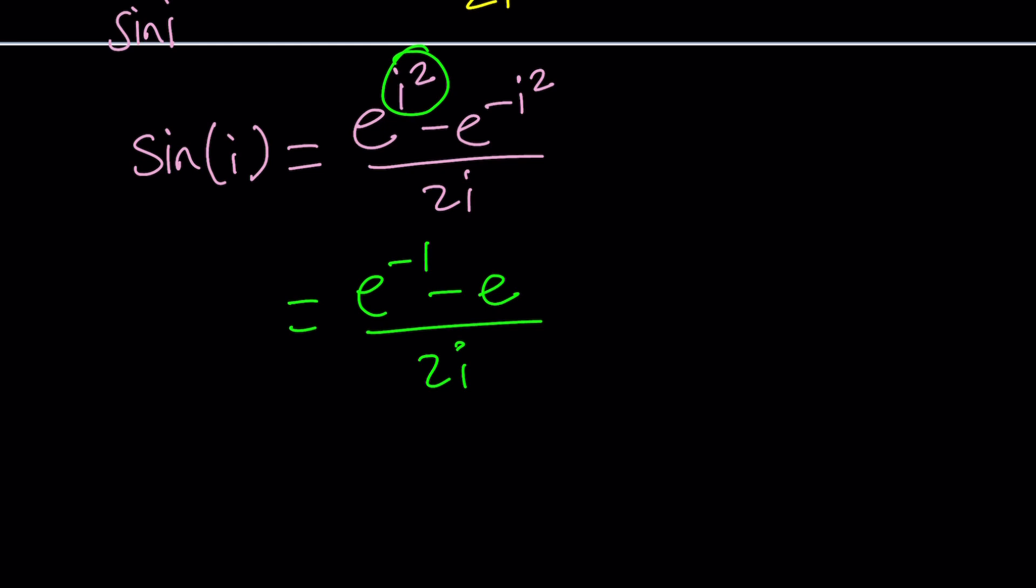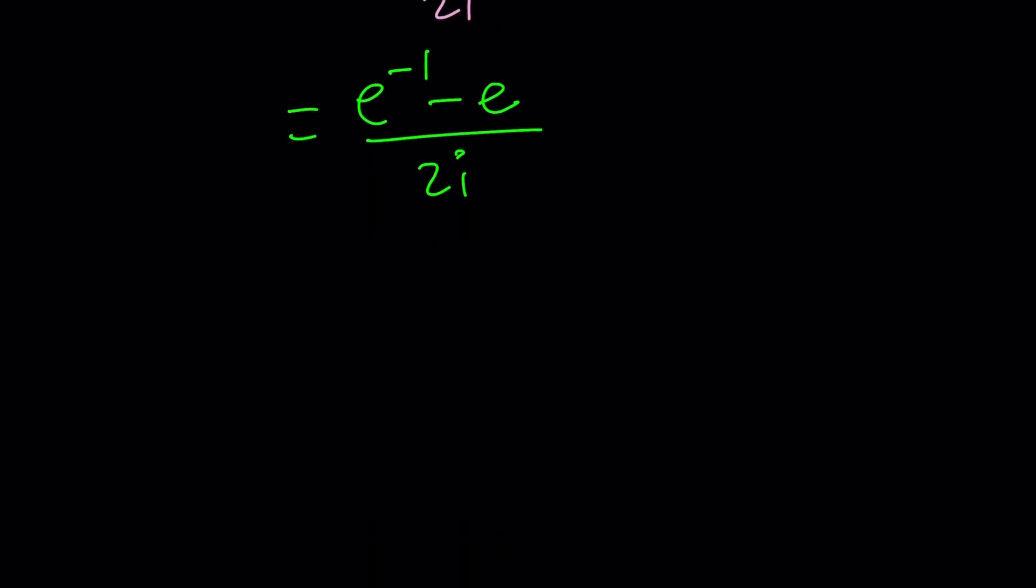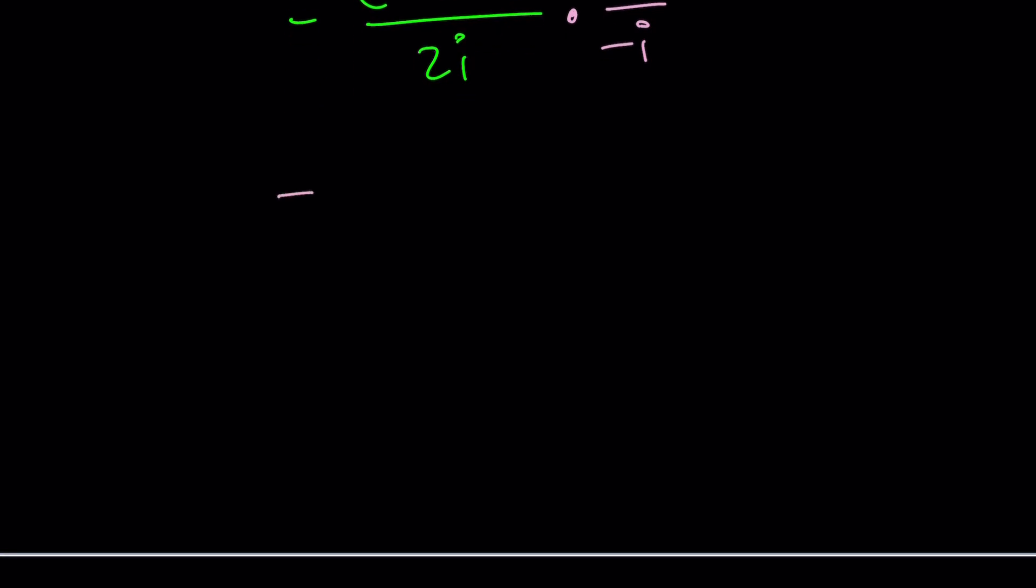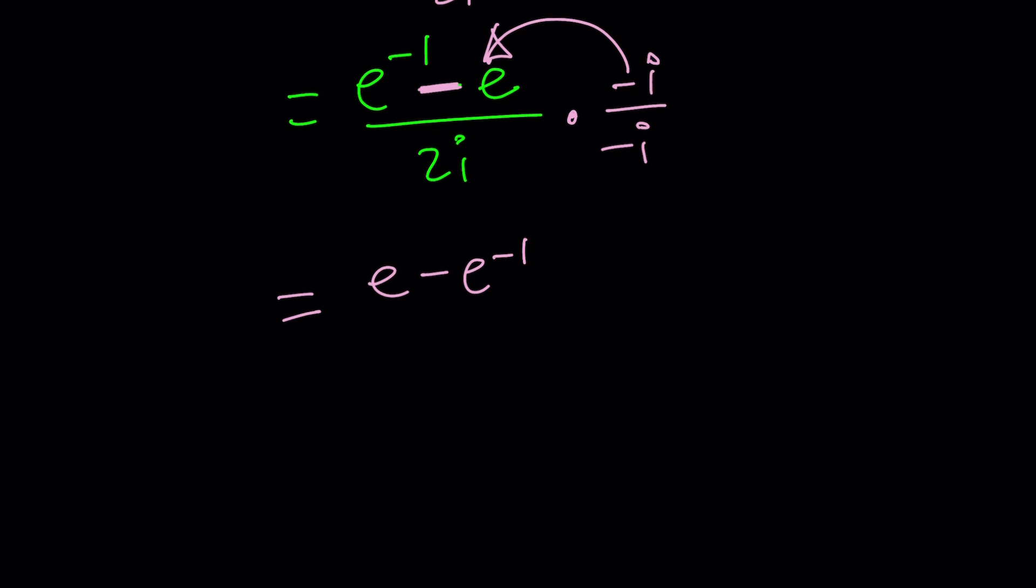So this will be e to the power of negative 1 minus e to the power positive 1 divided by 2i. Of course, you don't want i in the denominator. That looks really ugly. So we're going to multiply by negative i. And if you do that, negative i over negative i, of course, you're going to distribute. And when you distribute a negative sign, it's just going to switch. So it's e to the power 1 minus e to the power negative 1, and then that'll be divided by 2. By the way, negative i squared is 1 because i squared is negative 1. That's why i is defined as the principal square root of negative 1. There are two of them, but we consider this one the principal square root.